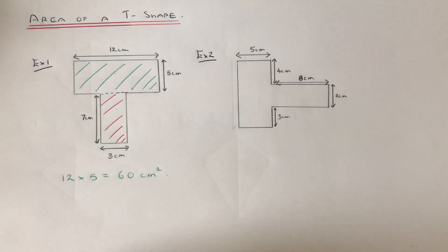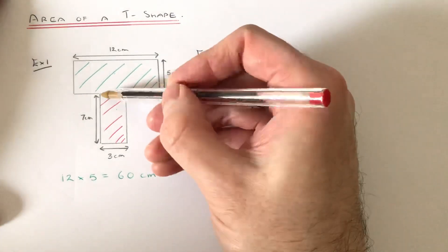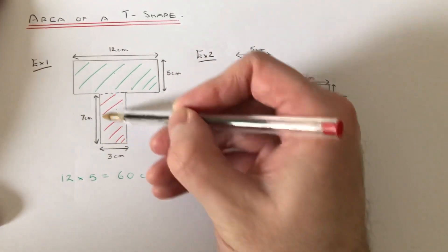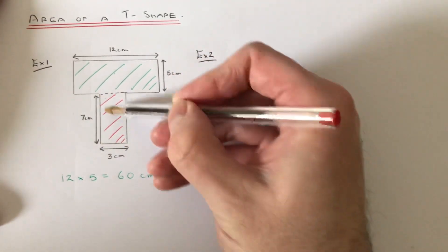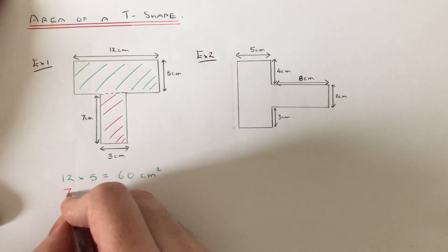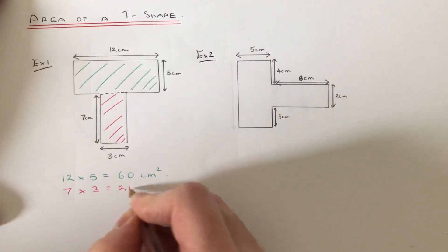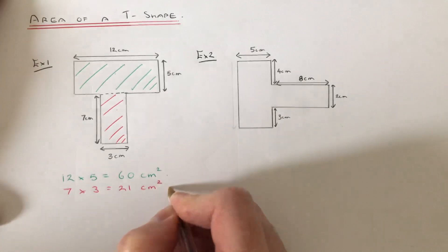And then let me do the red one. So again we just multiply the two sides of the rectangle together. So this time it's 7 and 3. So we go 7 times 3 which is 21cm squared.